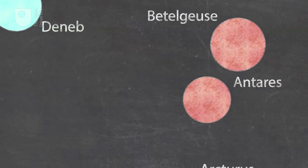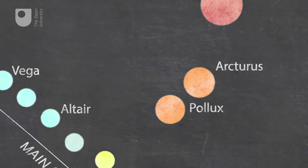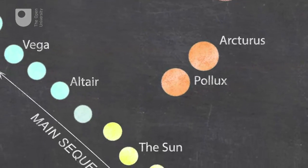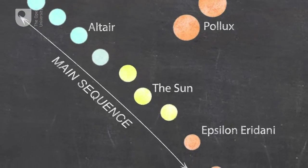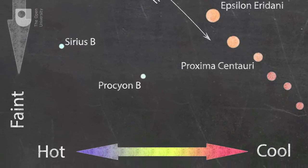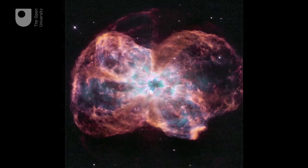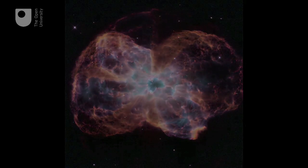There is a group of very faint but hot stars in the bottom left of the Hertzsprung-Russell diagram. These are called white dwarfs and are so faint that none is visible to the naked eye. They are very small and dense, formed when a main sequence star reaches the end of its life. White dwarf stars gradually cool over time until they no longer emit light.